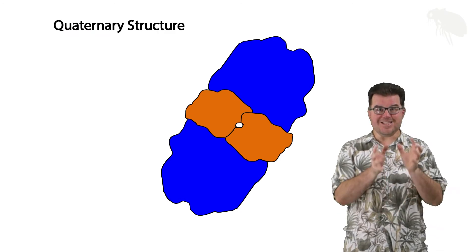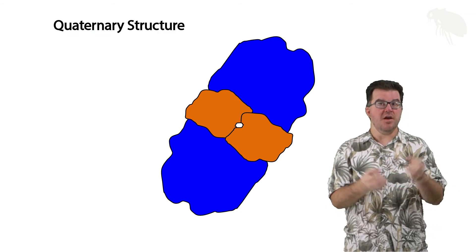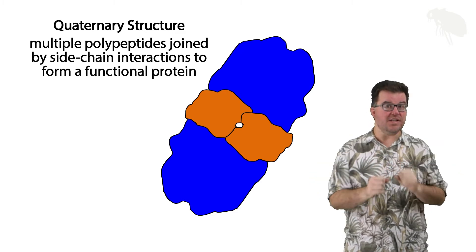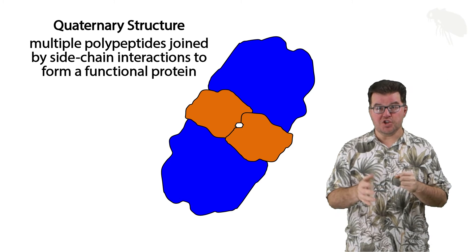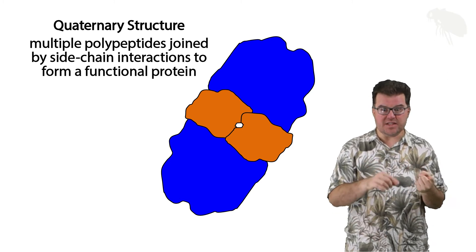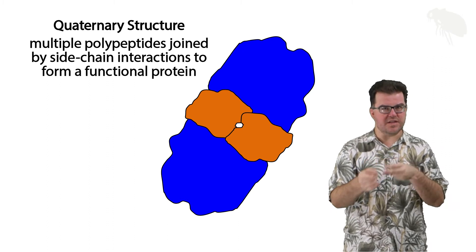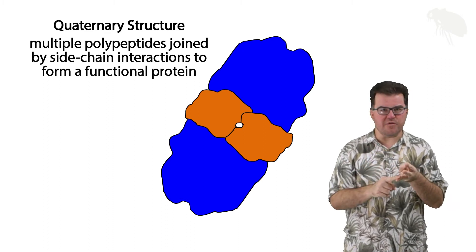Protein quaternary structure is the final assembled protein in which multiple polypeptides are connected using exactly the same forces as we saw at the tertiary level: ionic bonding involving side chains, hydrogen bonding or hydrophobic exclusion involving side chains, disulfide bridges involving side chains.